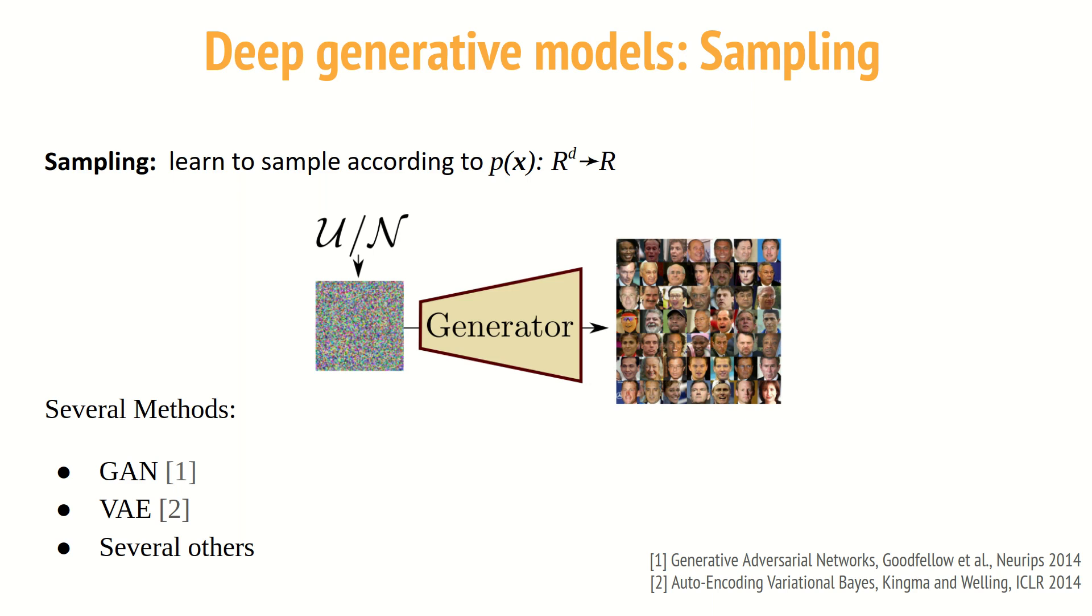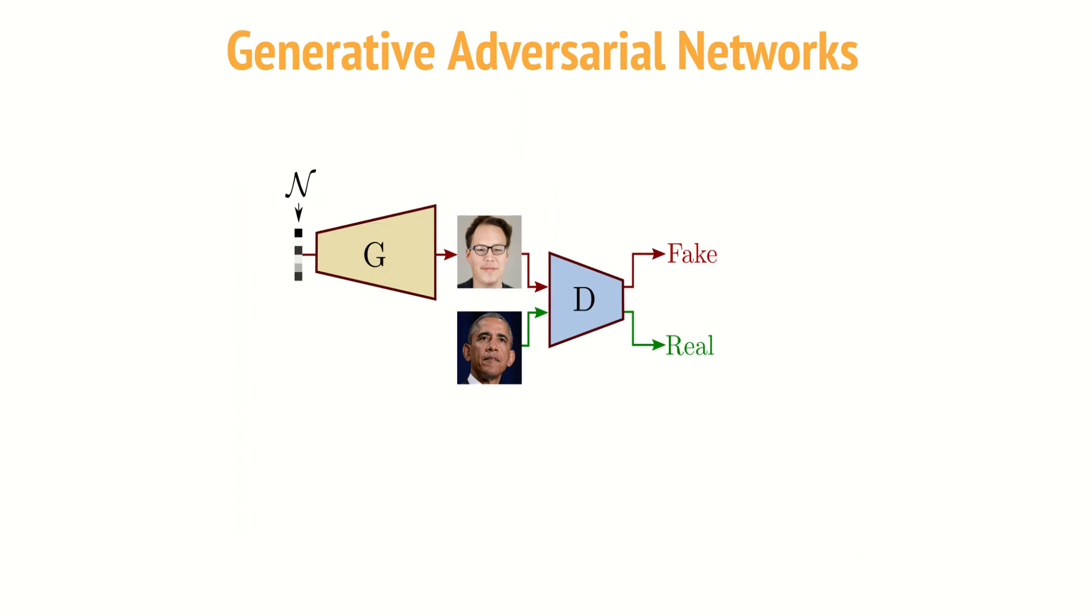Existing methods mostly differ by the strategy used to train this generator. Among existing methods, I am going to present Generative Adversarial Networks, or GANs, and Variational Autoencoders, or VAEs. Nevertheless, it is important to keep in mind that other approaches exist, such as flow-based methods or autoregressive methods. So, let's start with GANs.